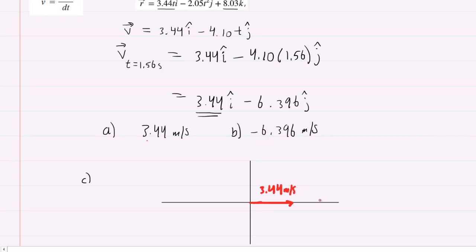The y component is negative, so you're going to project a vector downward along the y axis, and that will have a magnitude of 6.396 meters per second.